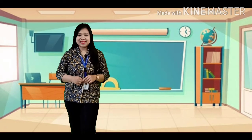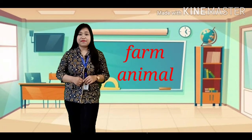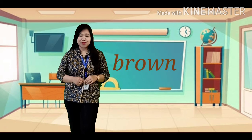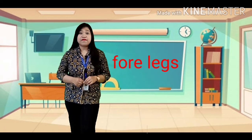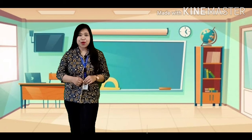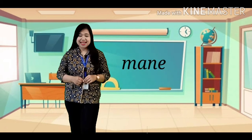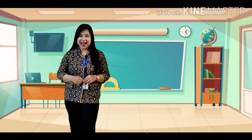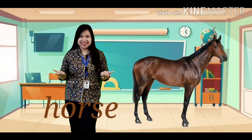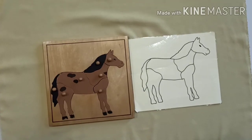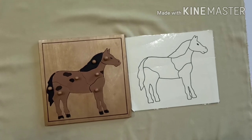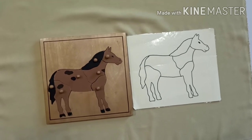Today we are going to discuss about one of the farm animals. The color is brown. It has four legs and a tail. Can you guess what animal that is? It's a horse! Now we are going to identify the body parts of a horse by using a puzzle and contra car.